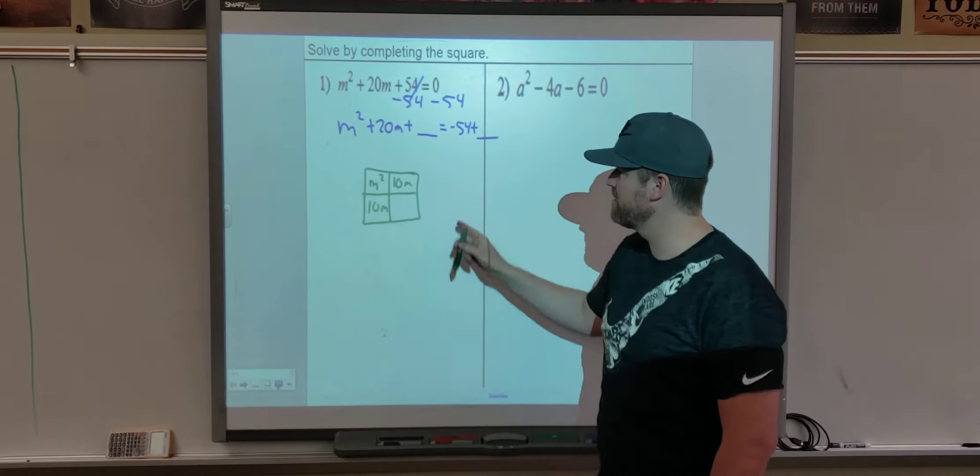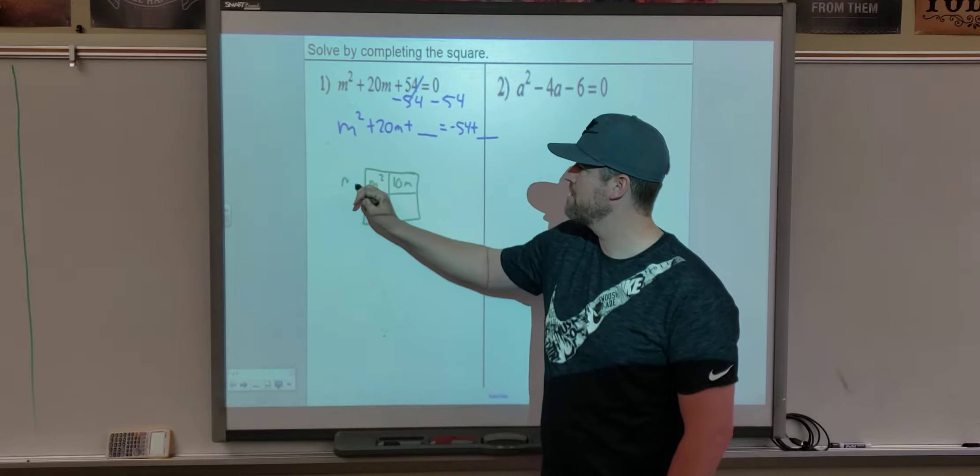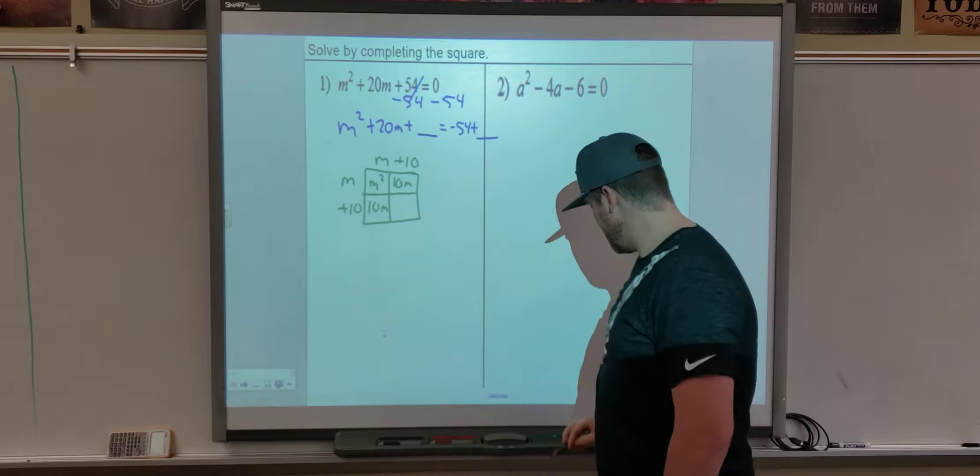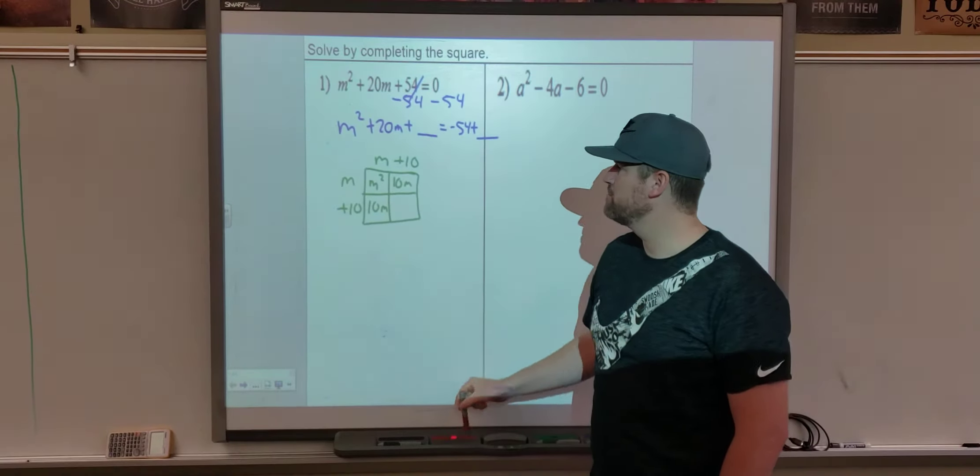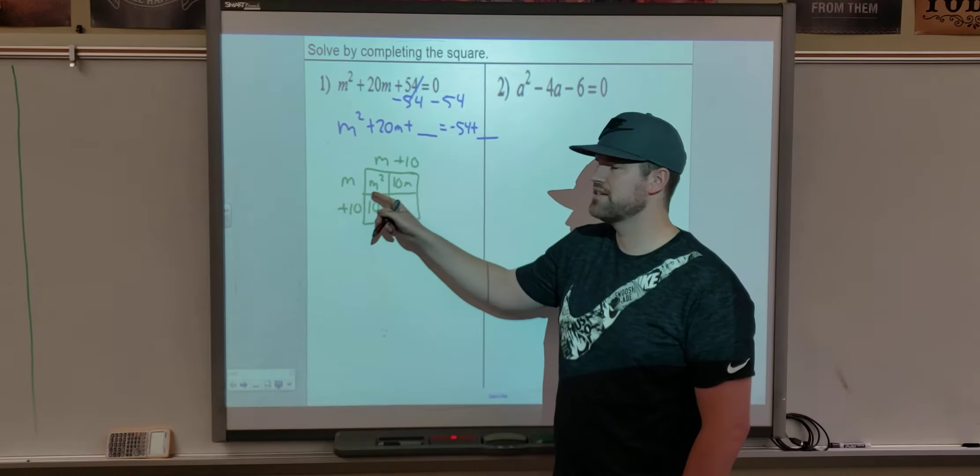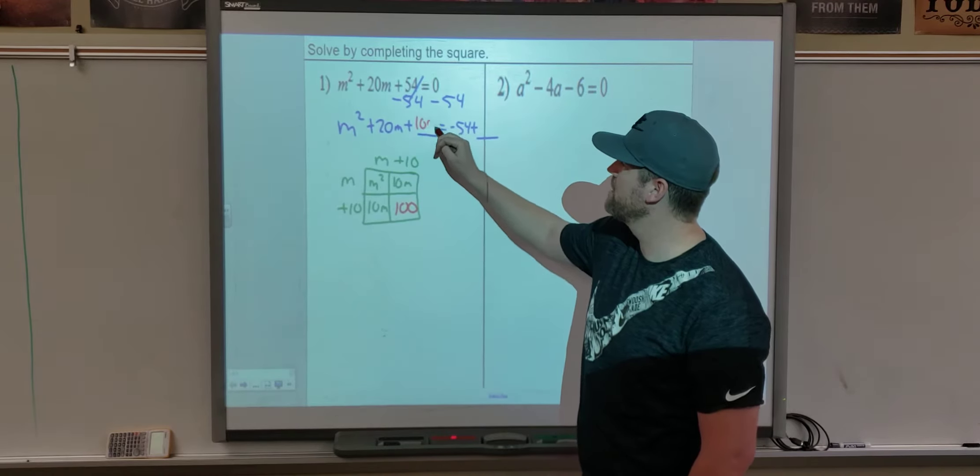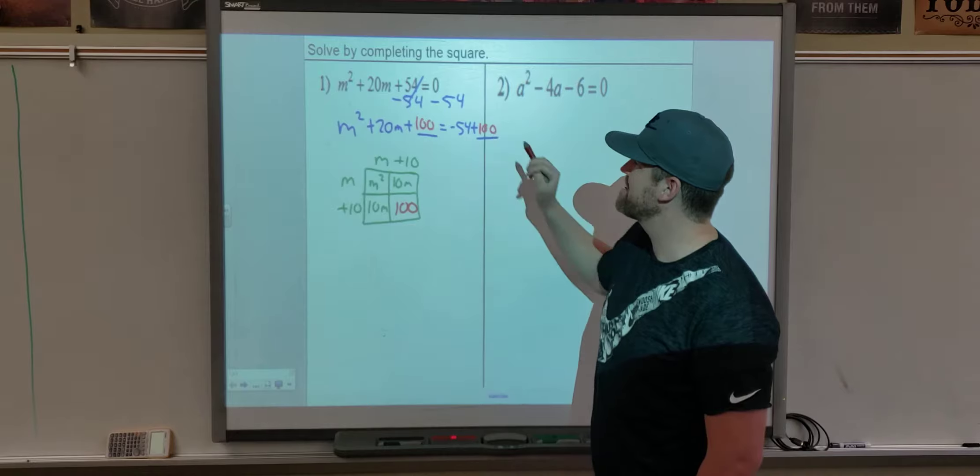We can now work around the outside, which gives us m, m, plus 10, plus 10. And that new C value that we're going to add to both sides is 10 times 10, which is 100. We're going to add the 100 to both sides.